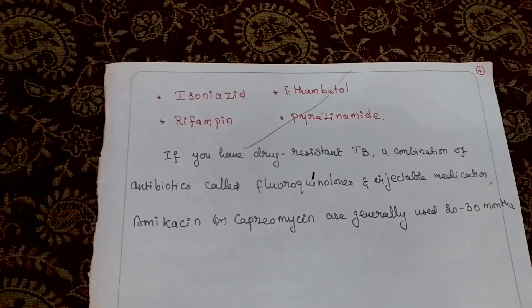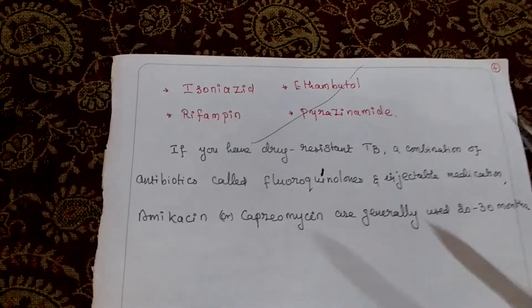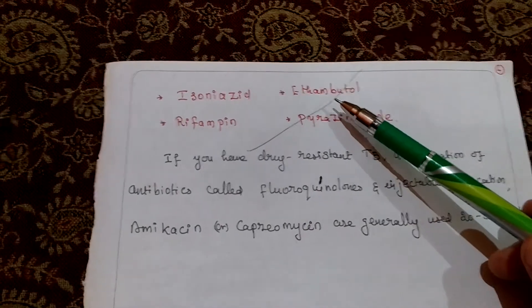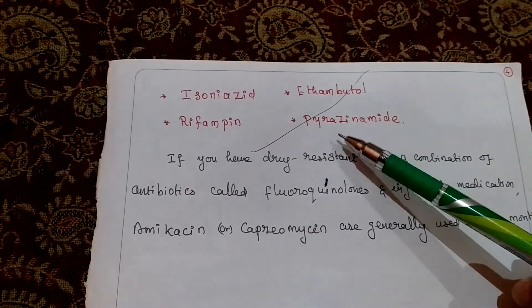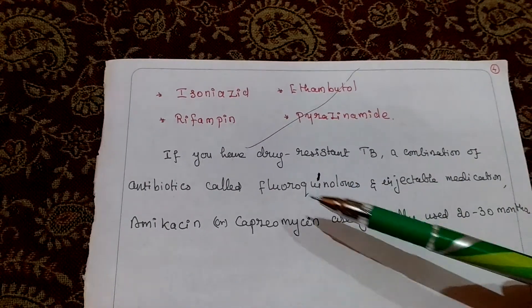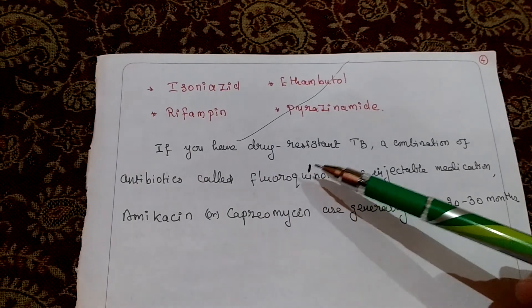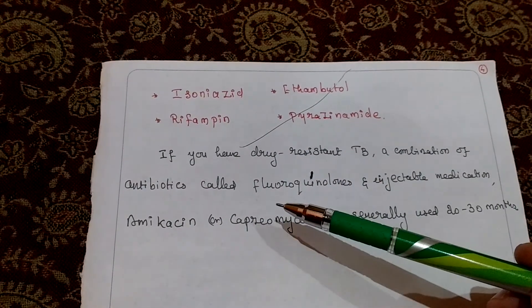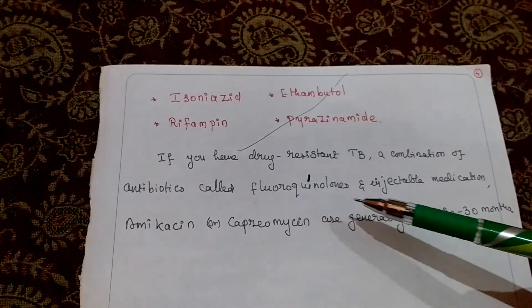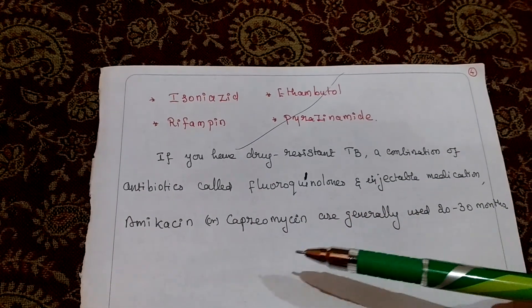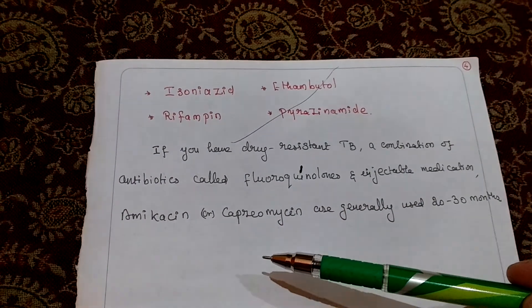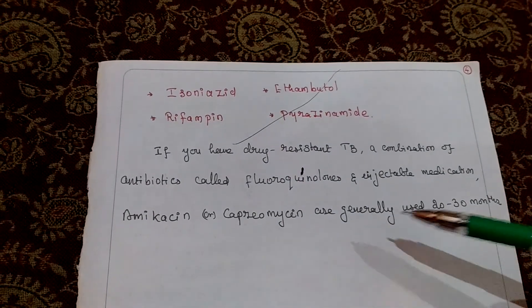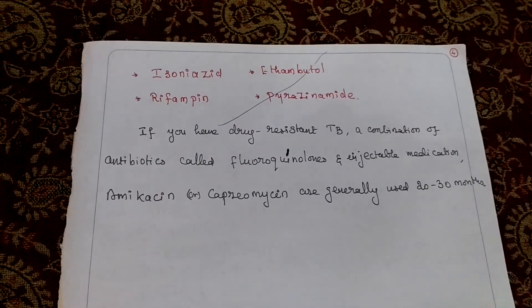The drugs used are isoniazid, rifampin, ethambutol, and pyrazinamide. If the patient has drug-resistant TB, a combination of antibiotics called fluoroquinolones and injectable medications such as amikacin or capreomycin are generally used for 20 to 30 months.